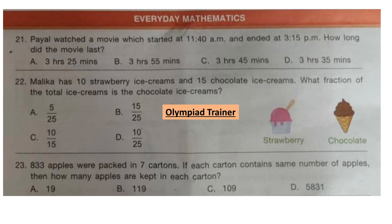Question 22. Malika has 10 strawberry ice creams and 15 chocolate ice creams. What fraction of the total ice creams is the chocolate ice cream? There are 10 strawberry and 15 chocolate, so total ice creams are 25. Chocolate ice creams are 15, so the fraction is 15 by 25. That is option B.